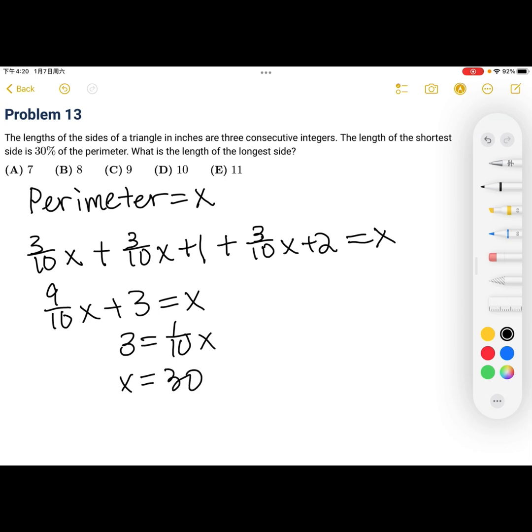And then since we're finding the length of the longest side, which is just three tenths x plus two, we can substitute 30 in for x.